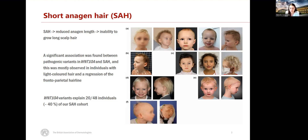It was also previously known that the heterozygous carrier may present with a sex-biased phenotype. In particular, males tend to present with these abnormalities, while females are more likely to show short nails or hair phenotypes. However, the hair phenotypes have never been described in depth. We can now say that the WNT10A-associated hair phenotype is SA.